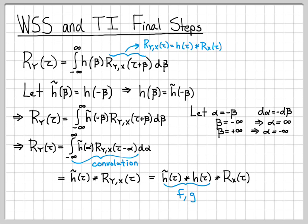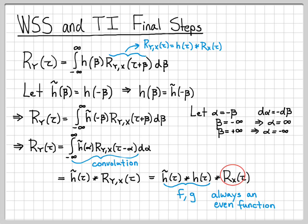We have this really nice final expression. Many books define the convolution of h with its time-reversed copy as f(τ) or g(τ), depending on notation. One nice property of this function is that it's always an even function, because it's constructed as a signal convolved with its time-reversed copy. Since R_x(τ) is also an even function, we really have an even function convolved with an even function, which is also even — as it needs to be.